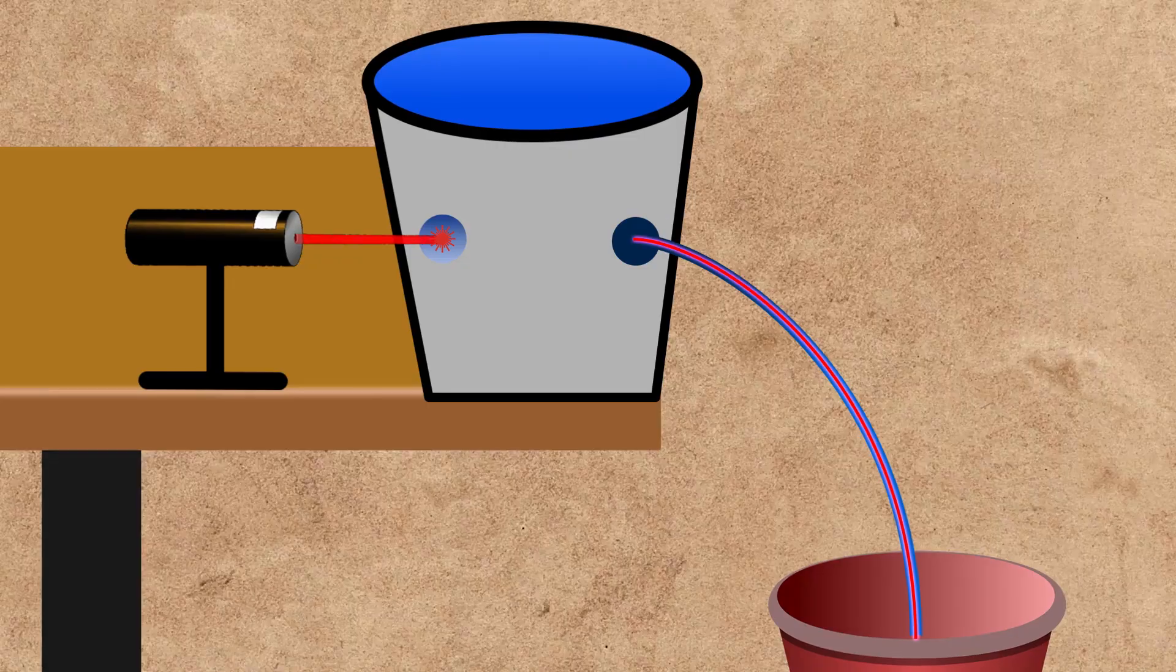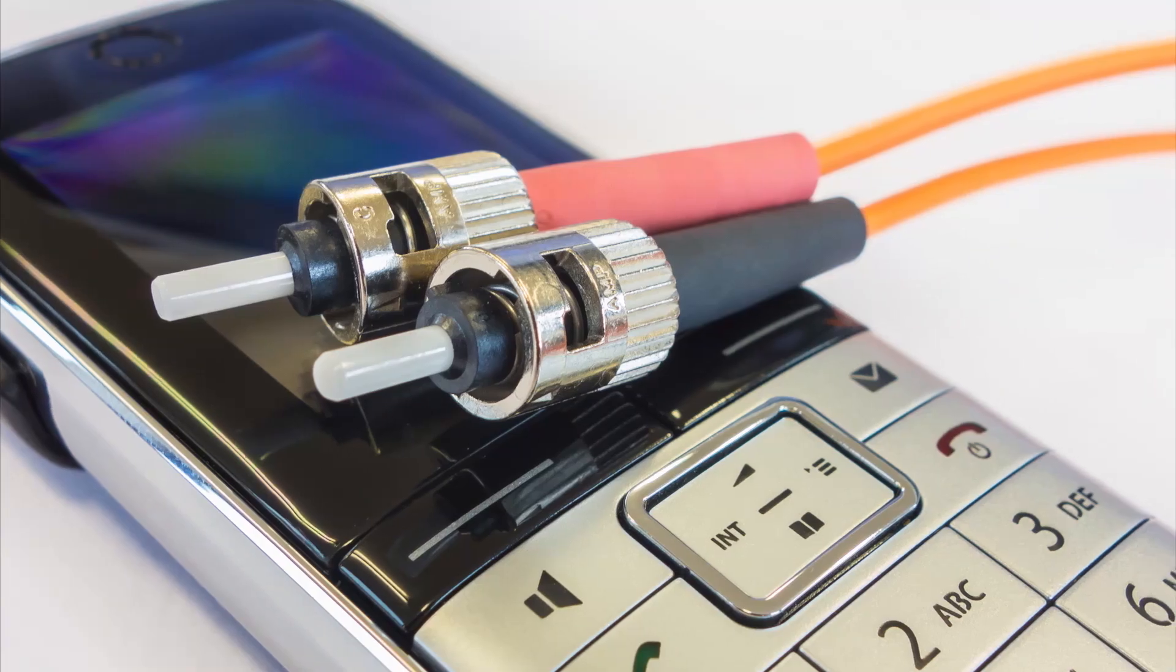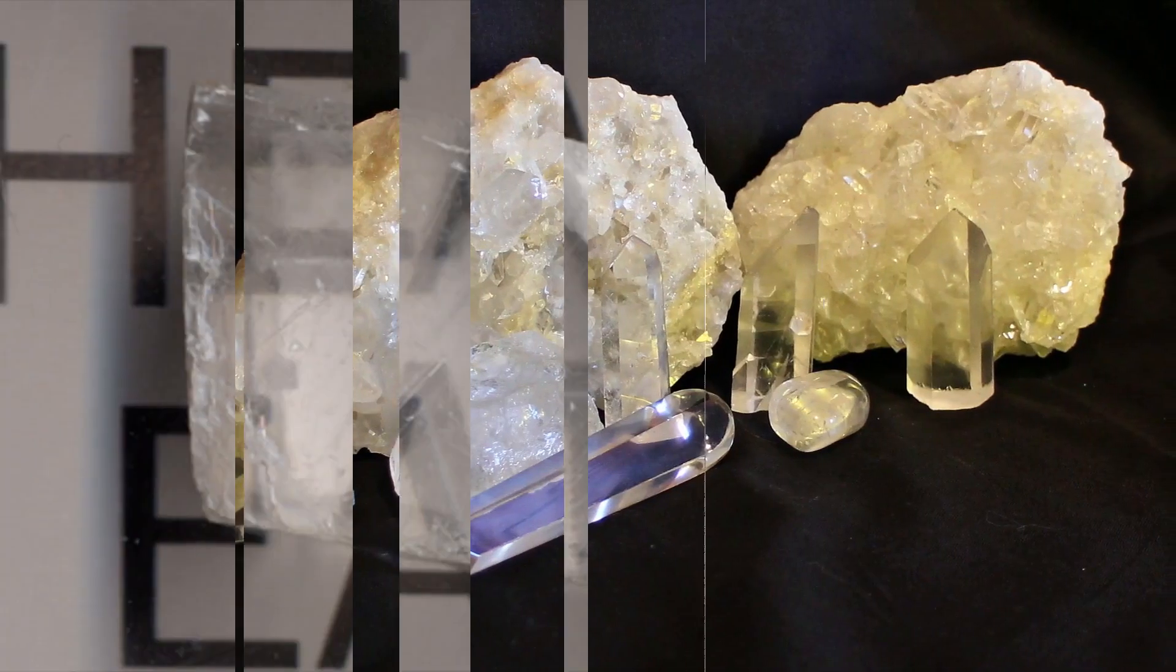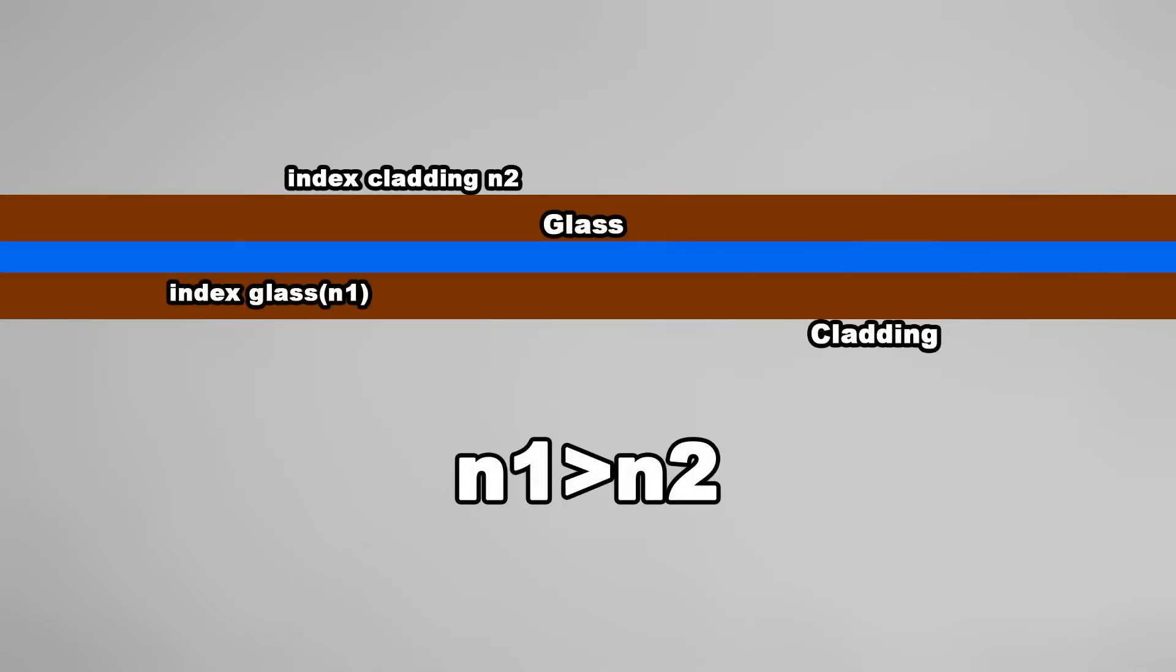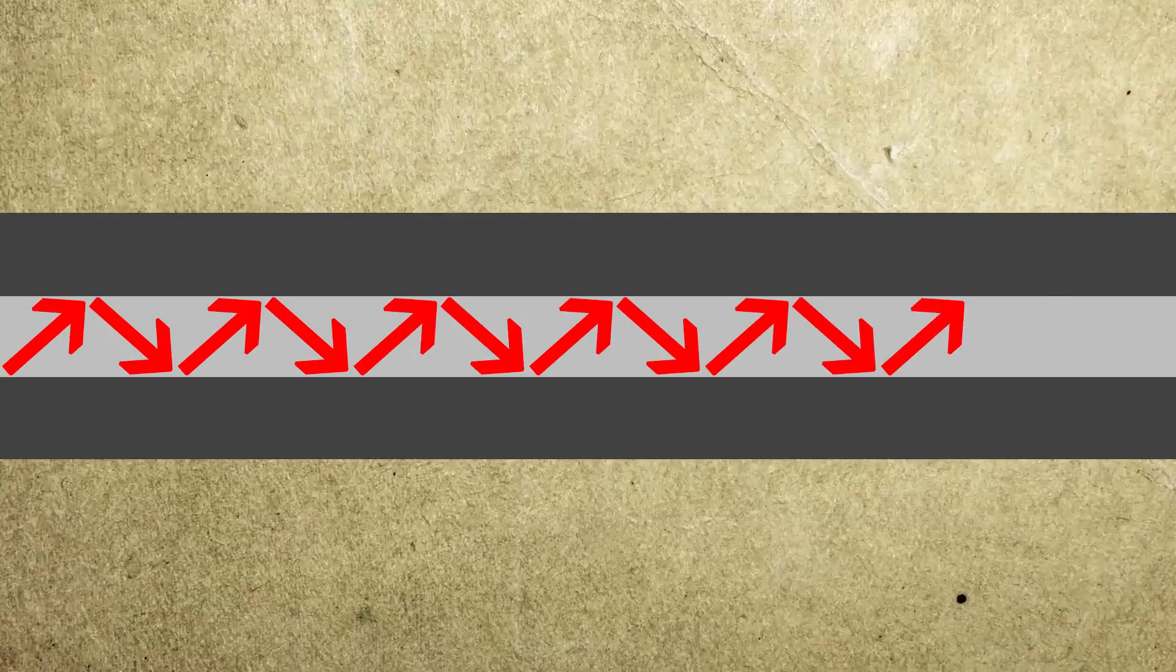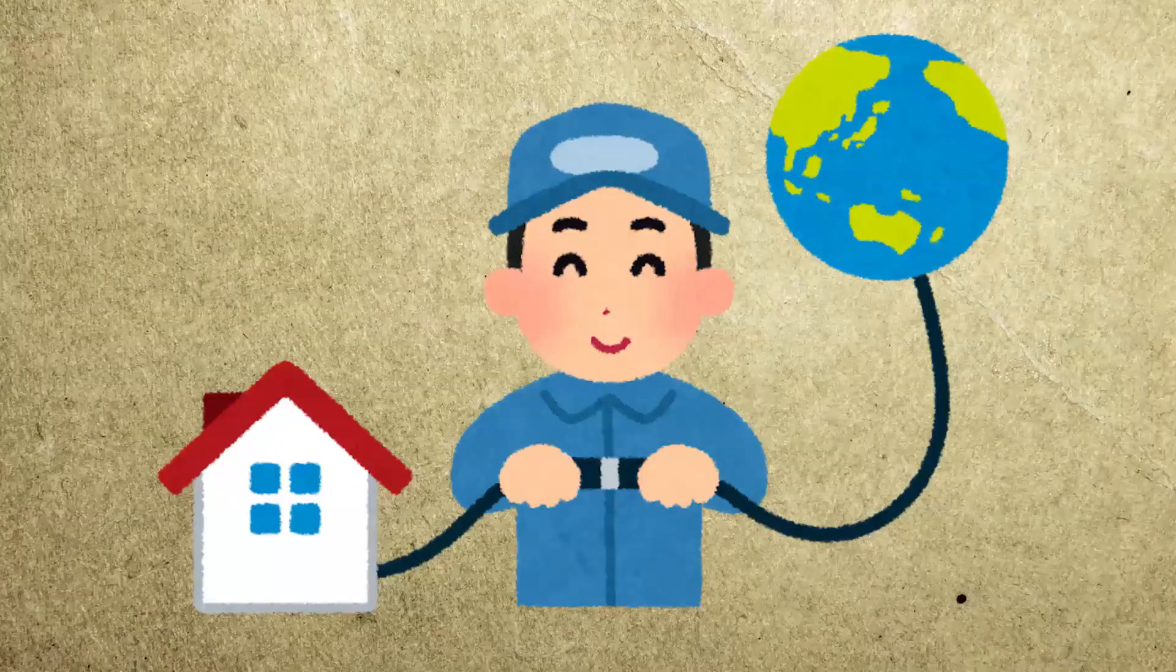Engineers use the same principle as the water bucket experiment to construct fiber optic cables. These cables have a core made of glass with a high refractive index, surrounded with a cladding layer with a lower refractive index. This difference in refractive indices allows light to bounce along the core, following its path to the destination.